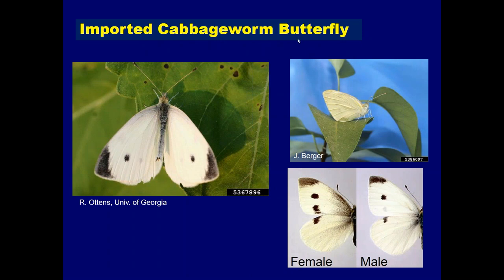Here you can see the imported cabbage worm butterfly — the adult stage. It's a white butterfly with black spots and black areas near the tip of the wings. When viewed from above you can spot those black areas, while when the butterfly rests with wings held up, it appears more yellowish. On the underside of the wings the yellowish, creamy color is more prominent — it's the same insect just viewed differently.